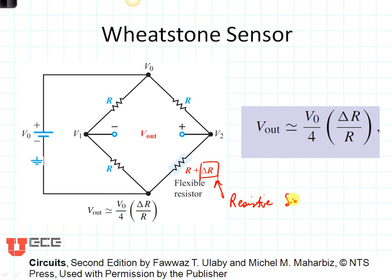And then you would measure the output voltage. The output voltage is equal to the change in resistance divided by the resistance, that's the R5 resistance, times V0 divided by 4.